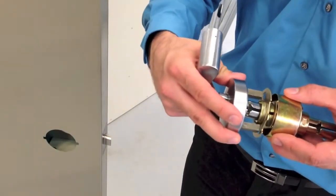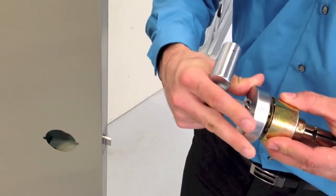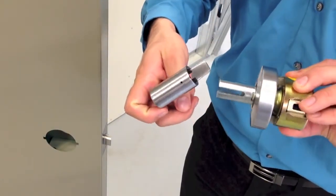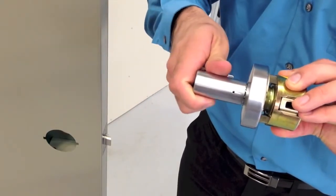Reinstall the outside lever, rose and spring cage. If you have a cylinder, install it at this time. Steps may be found in the installation instructions.